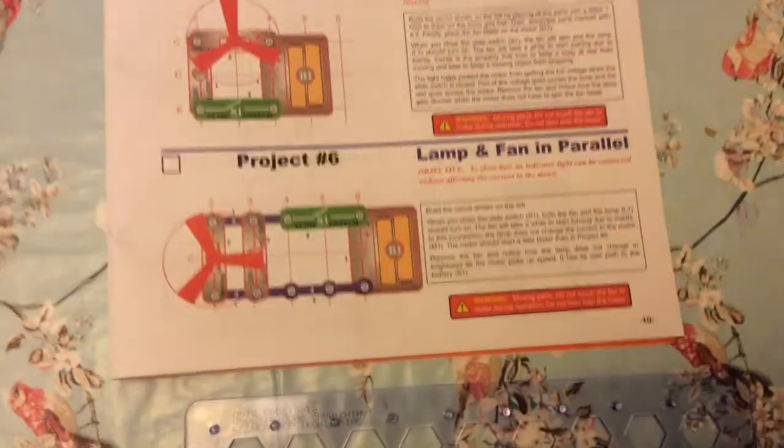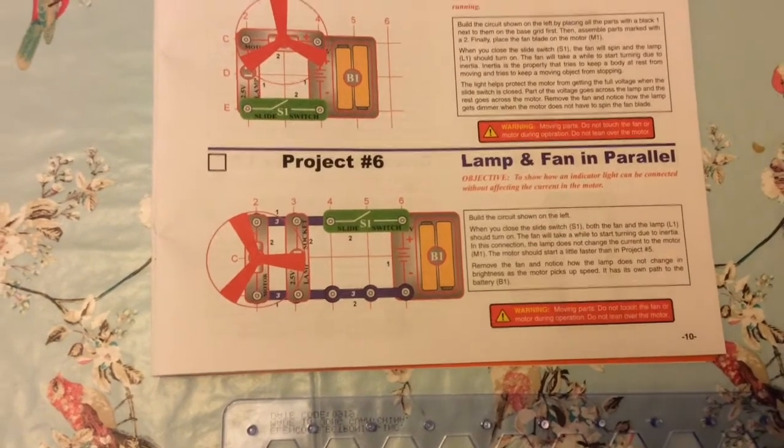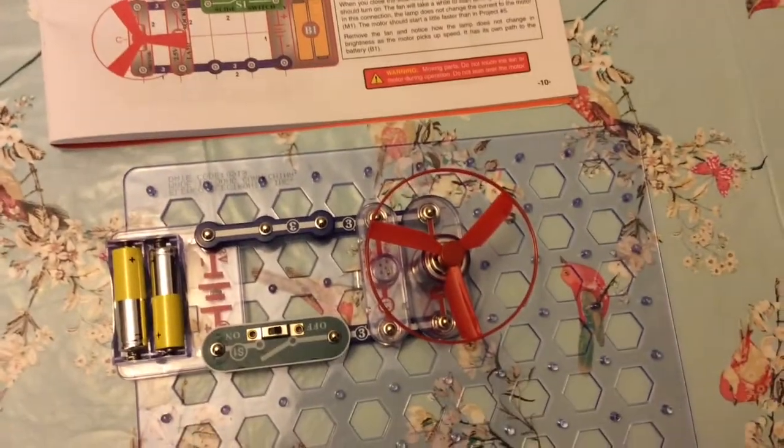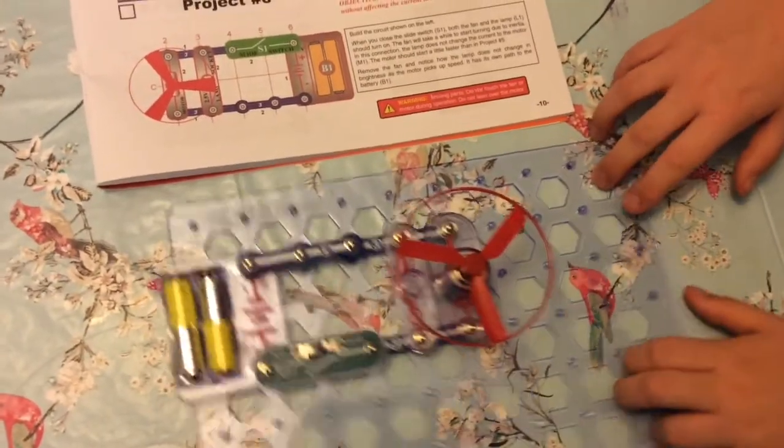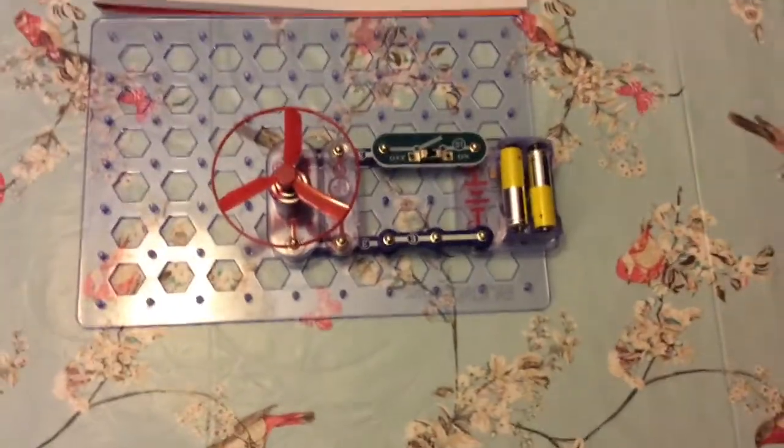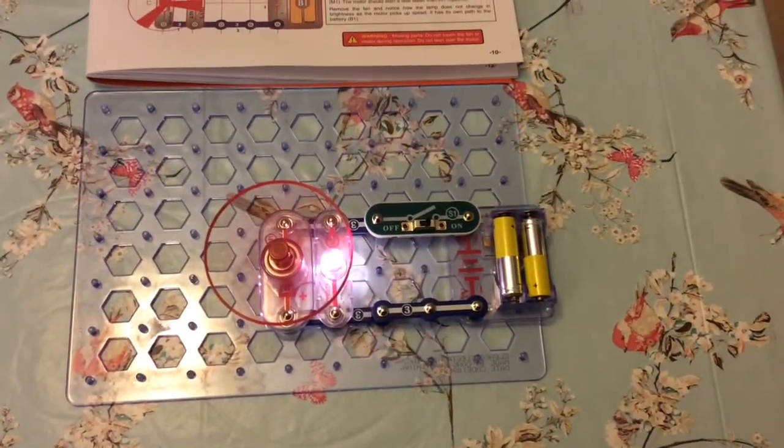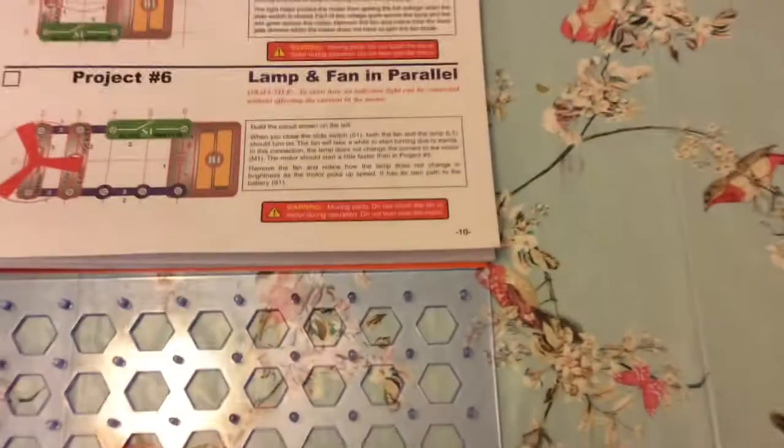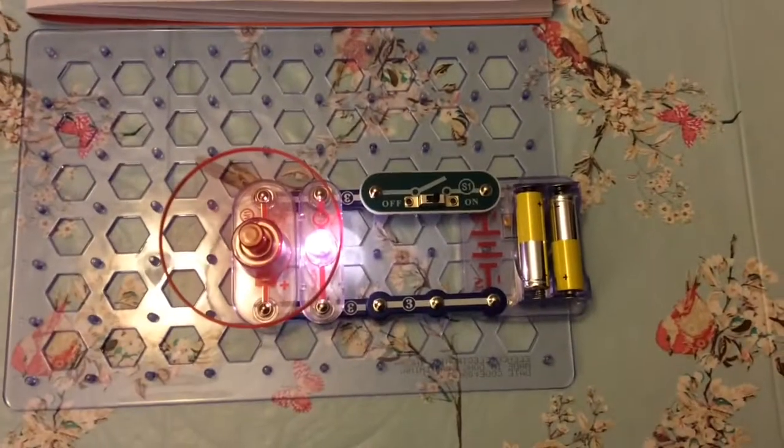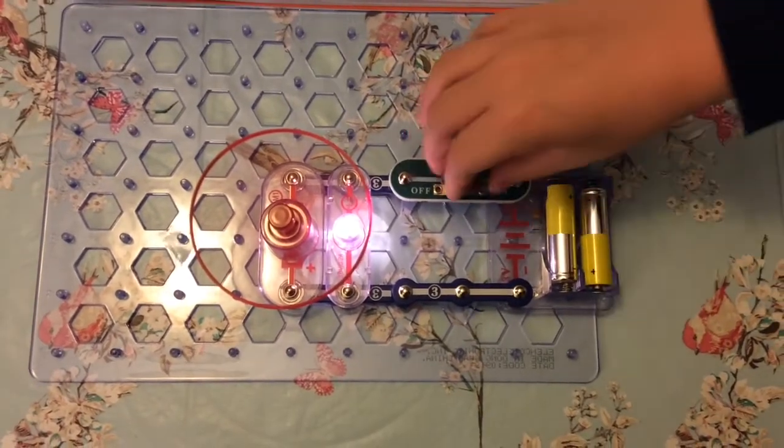Very good. Okay, so we're doing Project 6 now. Follow the easy steps so we should have a lamp and a fan in parallel. So it's the wrong way around, turn it around. That's it, make it like the picture. That's better. Right, so let's see if it works. Go! It does say a warning not to lean over the fan or touch it. I don't think it'll hurt you too much but you've got to be careful. Well done. And off.